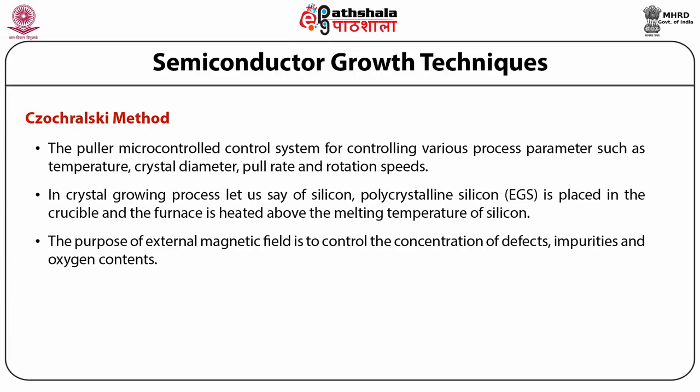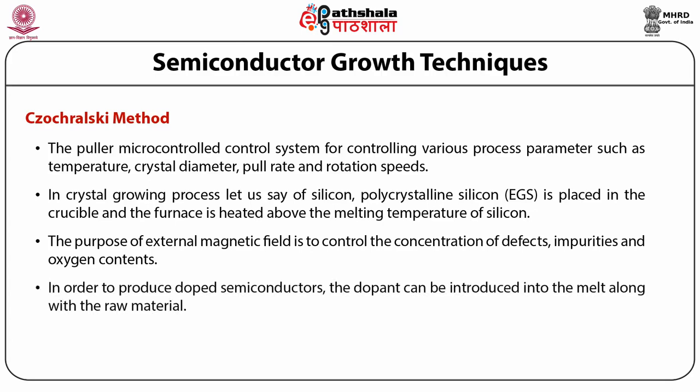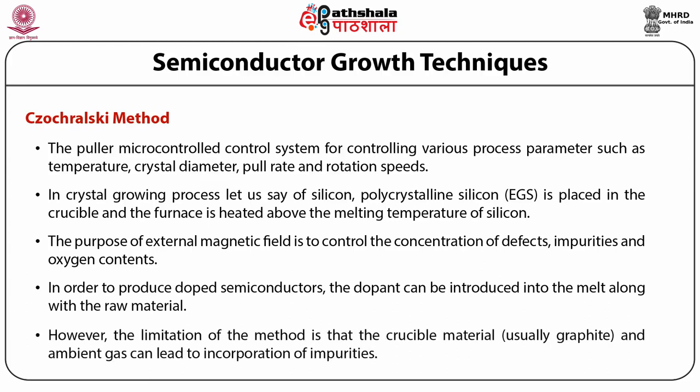A boron trioxide cap is essential for capping the silicon melt, and also in gallium arsenide melt it prevents arsenic loss when the pressure on the surface is above atmospheric pressure. To produce doped semiconductors, the dopant can be introduced into the melt along with the raw material. However, a limitation of this method is that the crucible material — usually graphite — and the ambient gas can lead to incorporation of impurities.